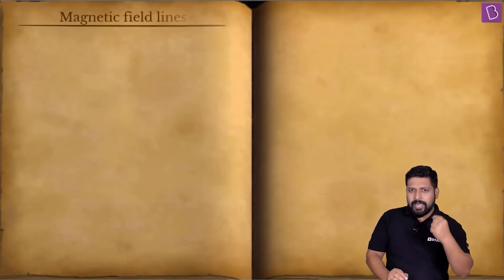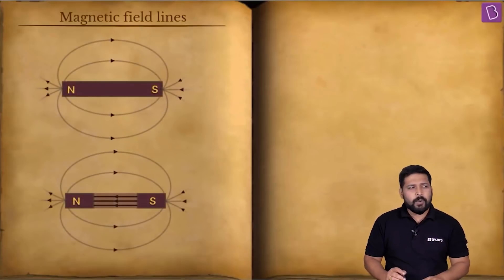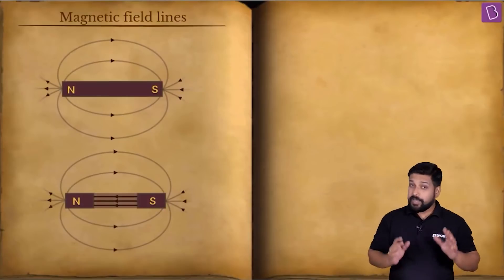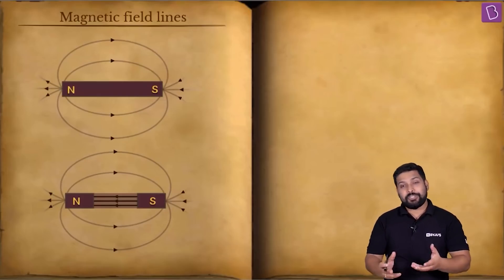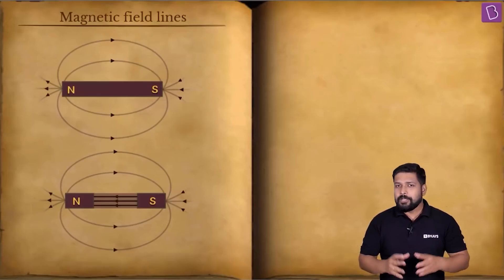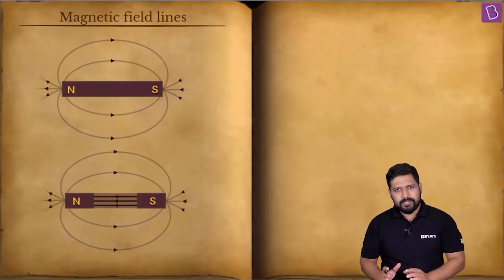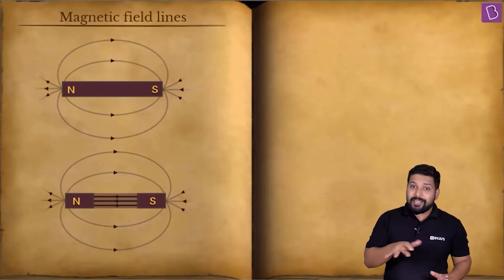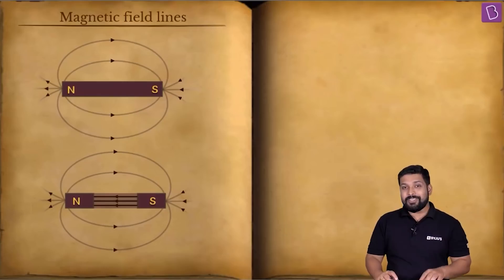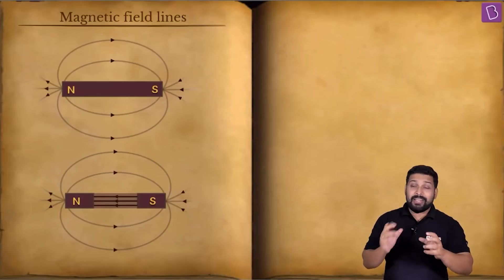We will get into the part now where we'll see all the properties of magnetic field lines. These things may seem basic, but at some point a question can be formulated from this part itself. Let us understand all the properties of magnetic field lines, because there is a lot of similarity in terms of the forces — attraction and repulsion — between charges and magnets.